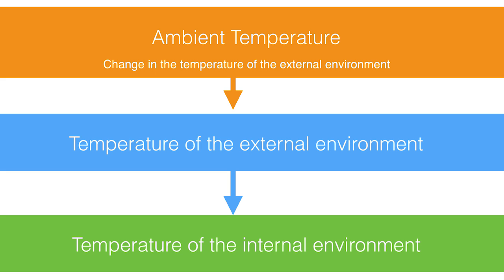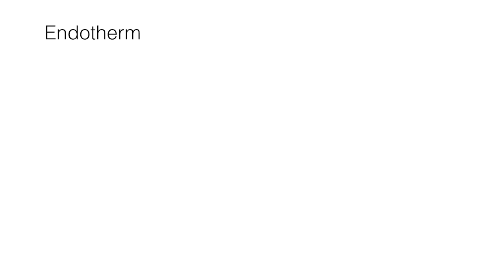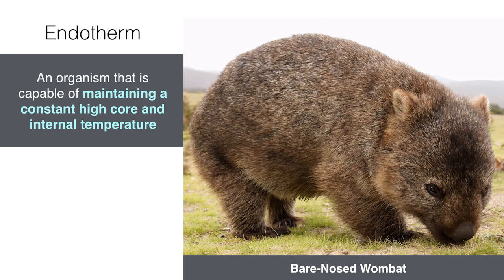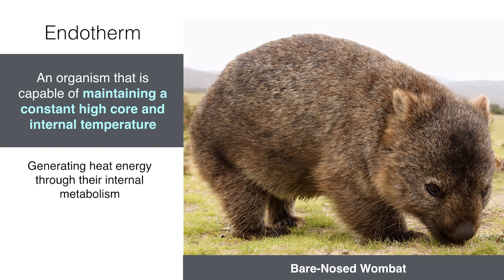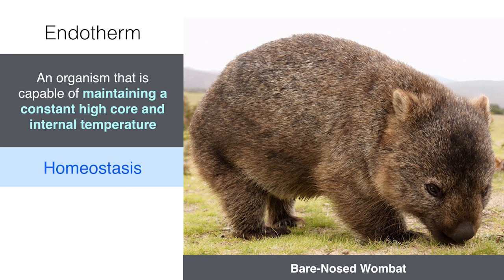Think of turning up the aircon and then putting on more clothes because you got cold — probably not the most economical example, but it gets the point across. We're now going to move on to the new stuff and look at the responses of endotherms and ectotherms to high temperatures or low temperatures. Firstly, what is an endotherm? An endotherm is an organism that is capable of maintaining a consistent high core and internal temperature. They do this by generating heat energy through their internal metabolism. Endotherms are therefore organisms that undergo homeostasis, and this constant high core temperature is one of the ways in which the endotherm is able to maintain a constant internal environment.